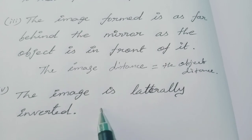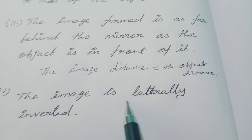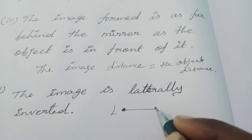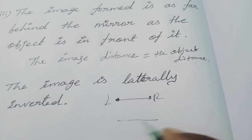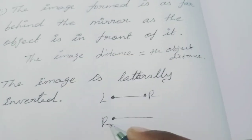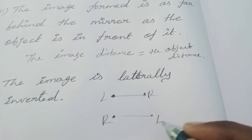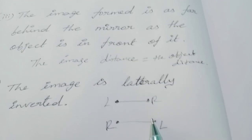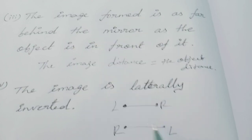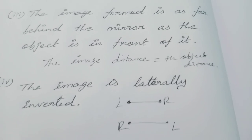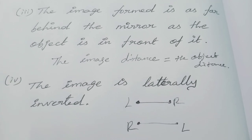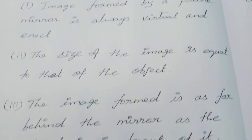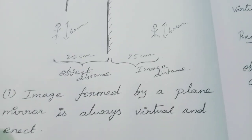The last point: the image is laterally inverted. This means the image is not inverted top to bottom, but it is inverted laterally — the left-hand side appears to be the right-hand side. So lateral inversion takes place in the case of a plane mirror. These four points are the properties of the plane mirror, and this is one of the most important topics under this lesson.